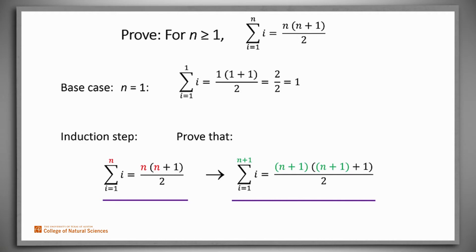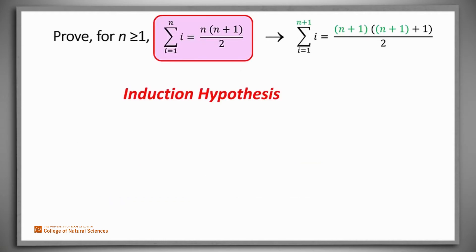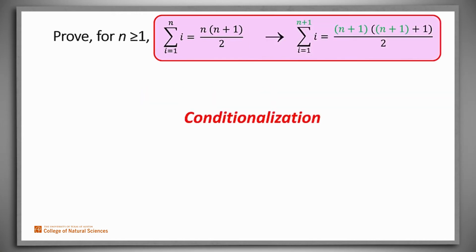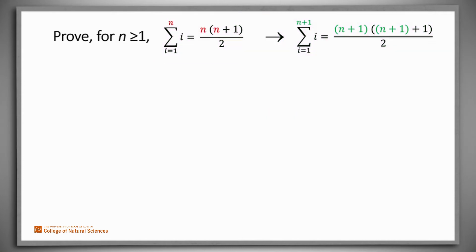So how can we do that? We'll call the claim that P is true of n the induction hypothesis. We'll assume it, we'll reason with it, and then we'll use the conditionalization rule to conclude that P of n does imply P of n plus 1. Typically, in order to do that, we'll try to express P of n plus 1 in terms of P of n, and then we'll be able to exploit the induction hypothesis.